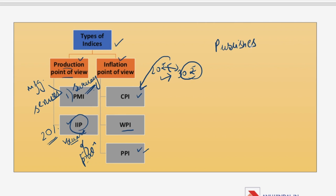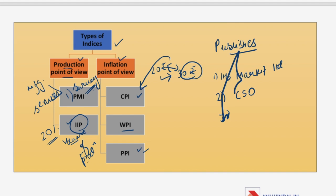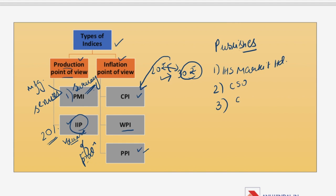Regarding who publishes these indices: PMI is published by IHS Market Limited. IIP is published by CSO — the Central Statistical Organization. CPI is also published by CSO. WPI is published by the Economic Advisor (EA) from the Ministry of Commerce and Industry. PPI is published by the Bureau of Labor Statistics. Remember who publishes these indices as a question could be asked in your examination.